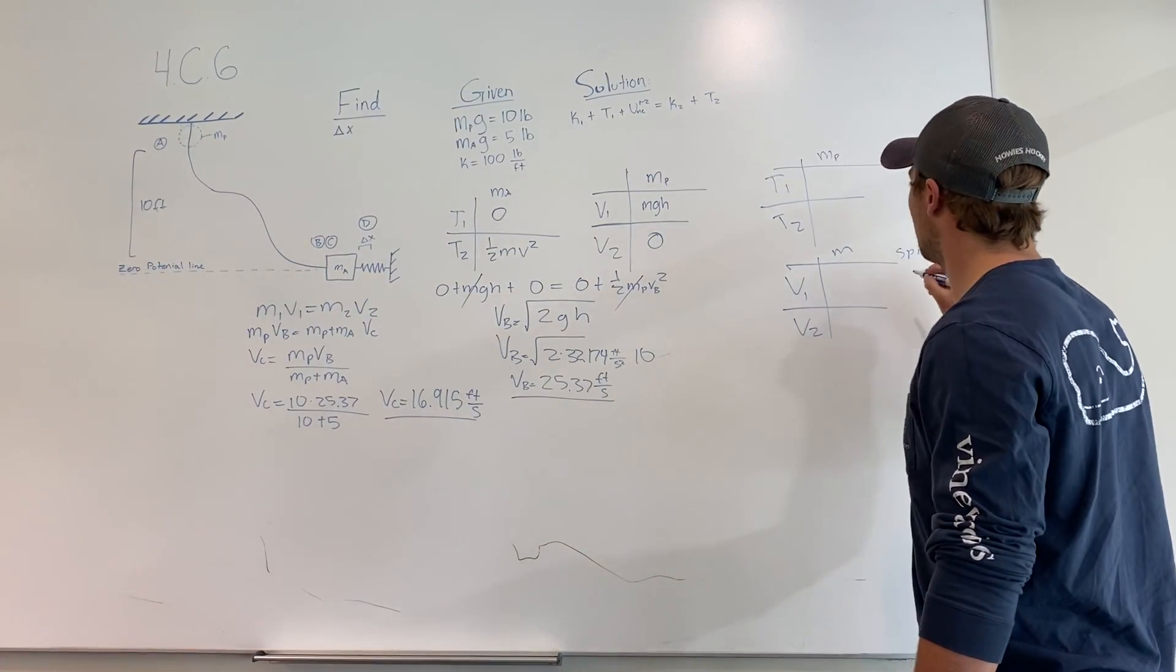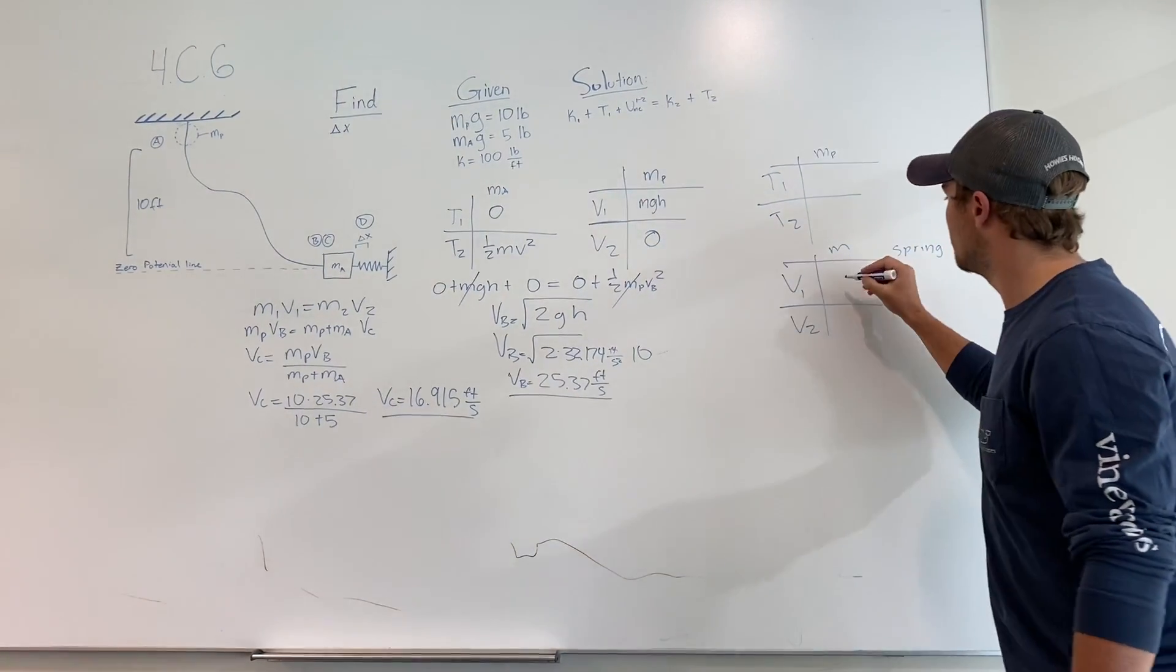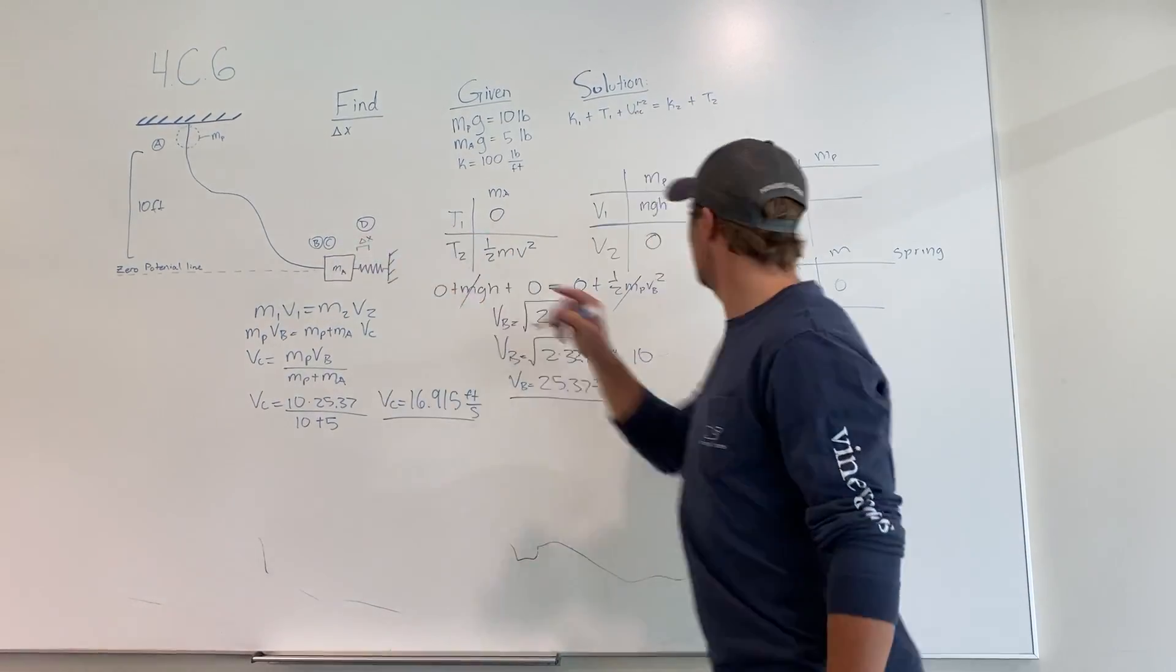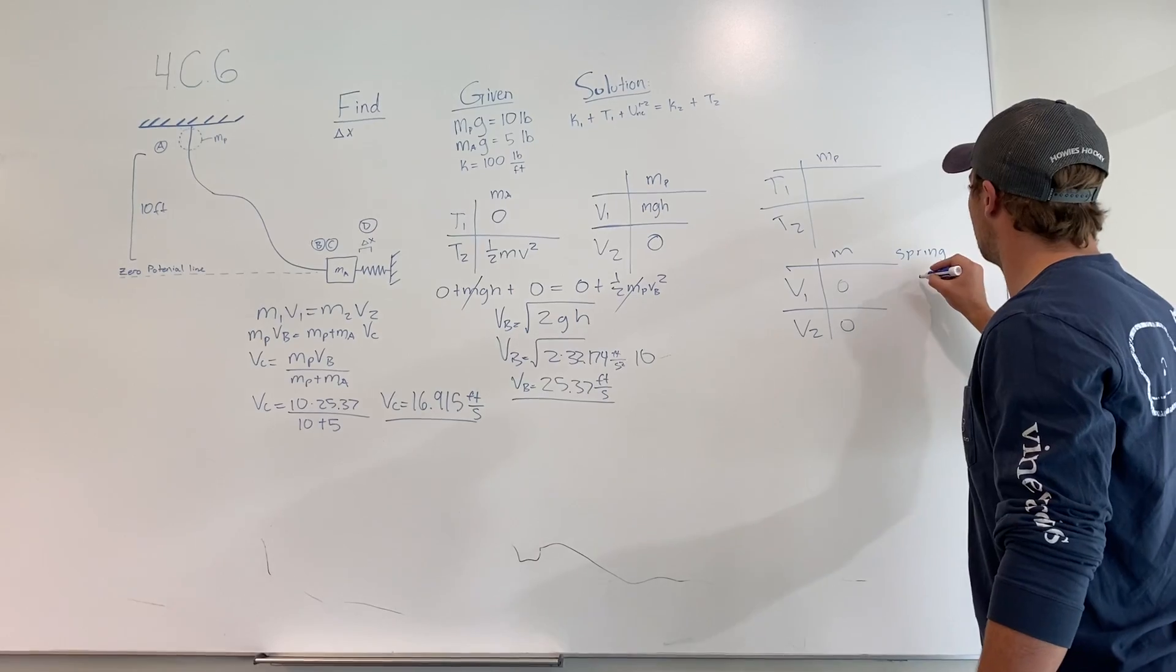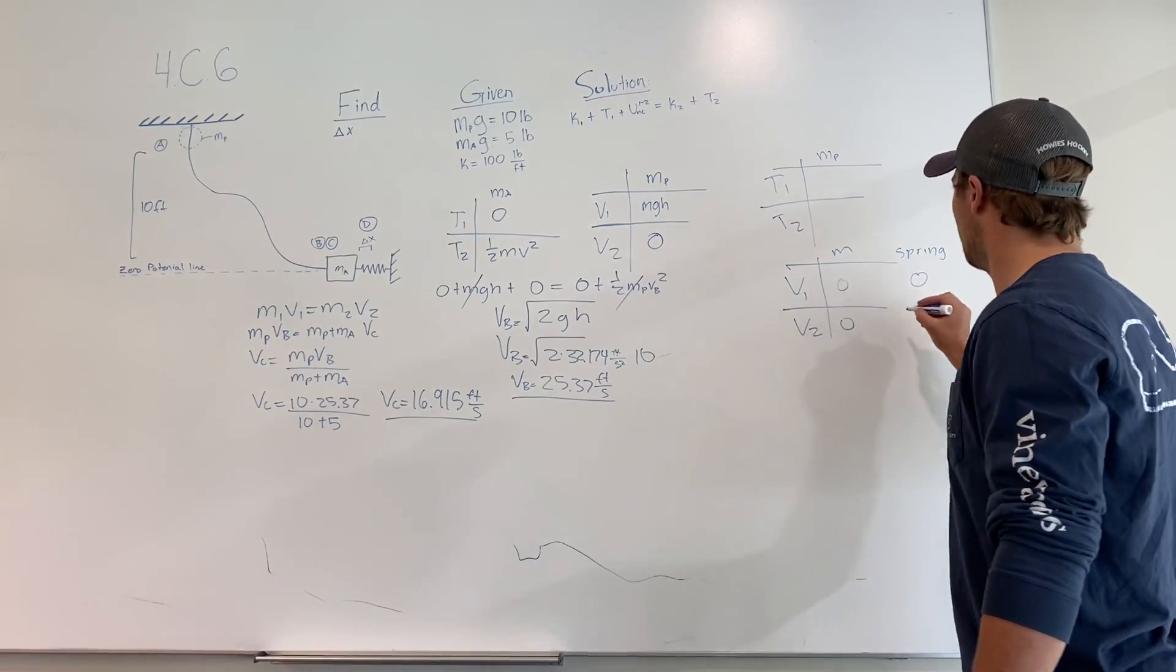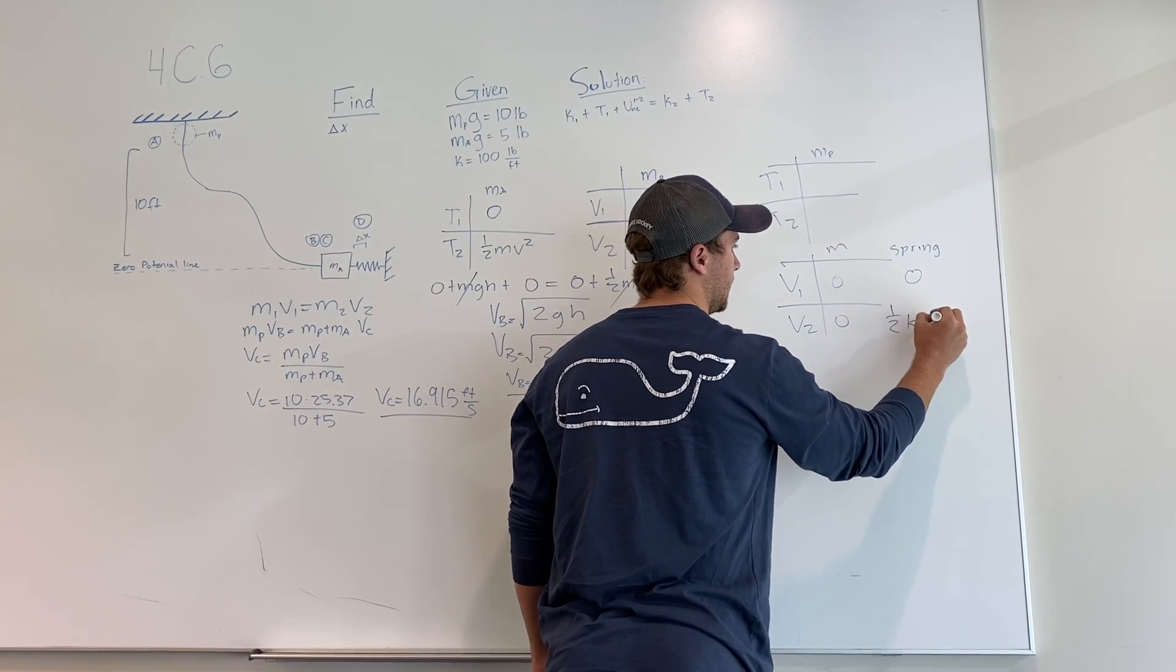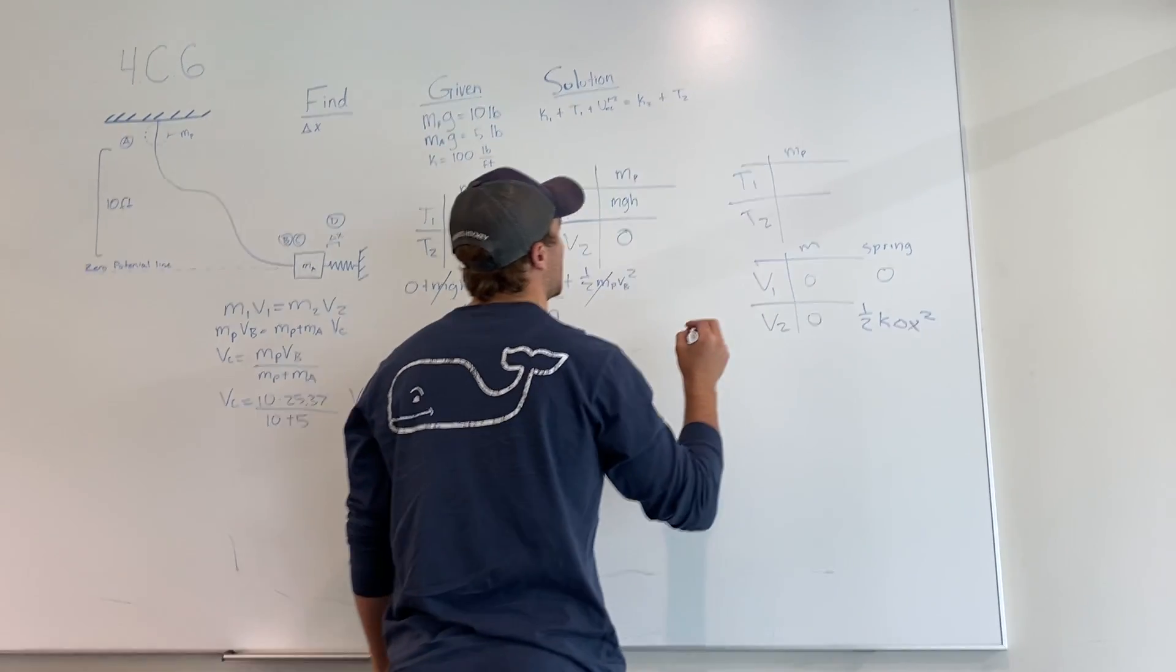So the potential of the mass is zero from both C to D. And then the potential of the spring at D is one half K delta x squared.